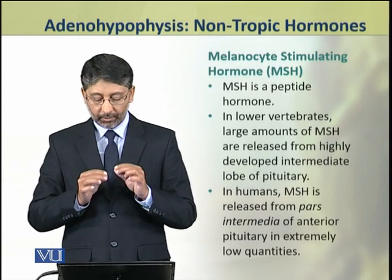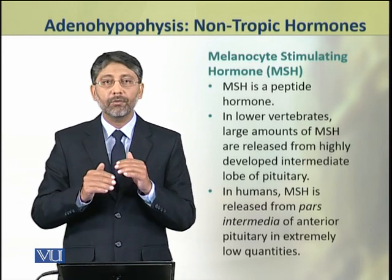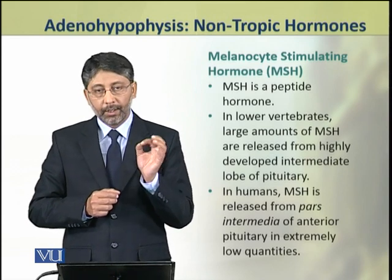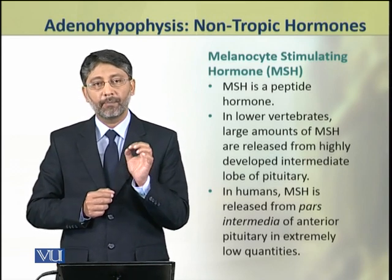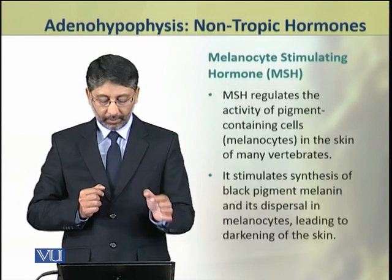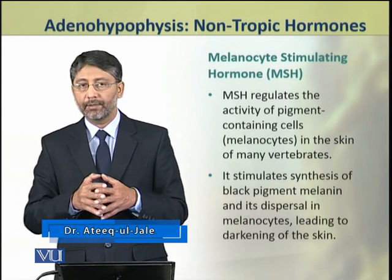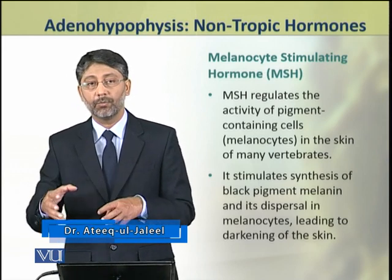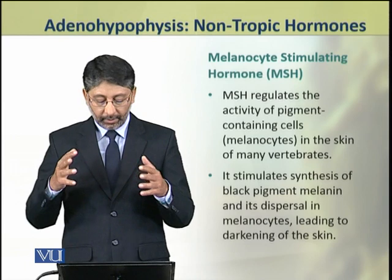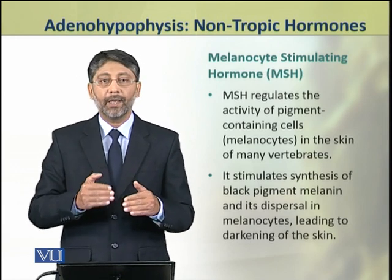The melanocyte stimulating hormone or MSH is a peptide hormone. In lower vertebrates, large amounts of MSH are produced from the intermediate lobe of the pituitary. In humans, MSH is produced from the pars intermedia of the anterior pituitary in extremely low quantities. MSH regulates the activity of pigment-containing cells, that is melanocytes, and stimulates the synthesis of the black pigment melanin by melanocytes.